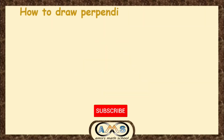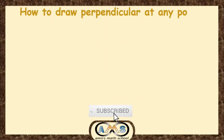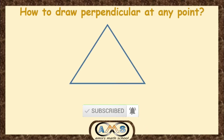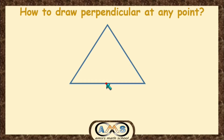Now, how to draw a perpendicular at any point. This is a triangle and we want to draw a perpendicular at this point. For this, take this point as the center and with any radius, draw one arc.